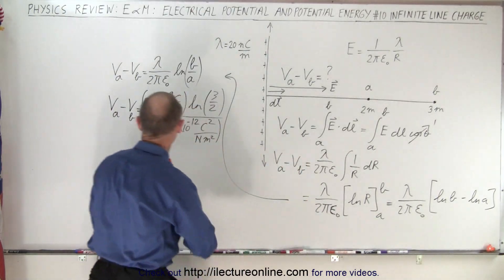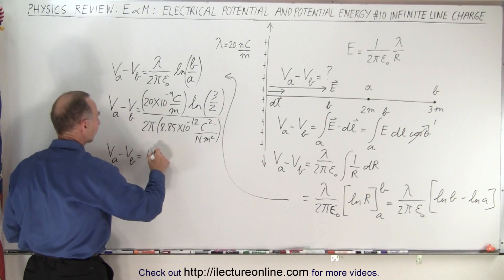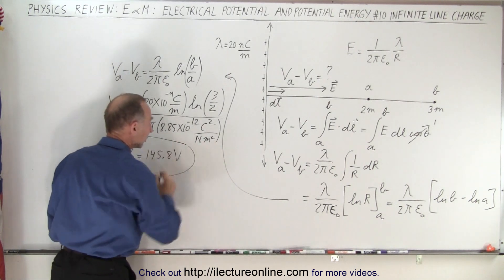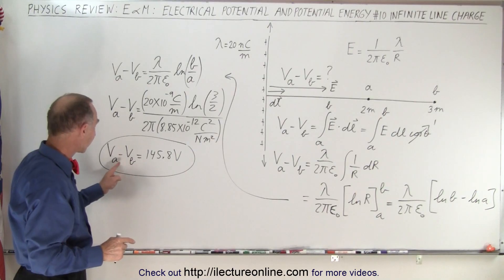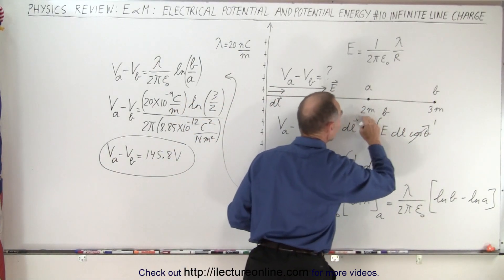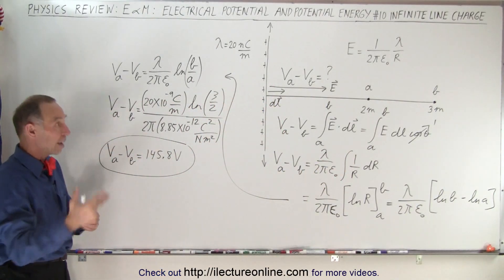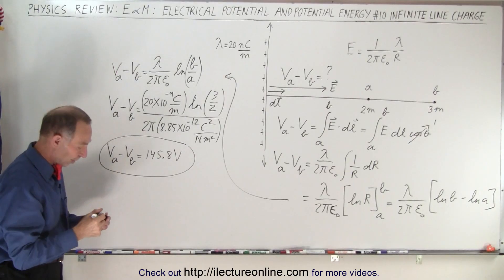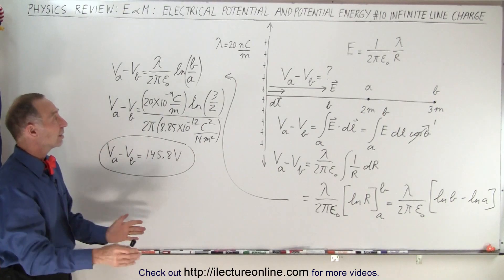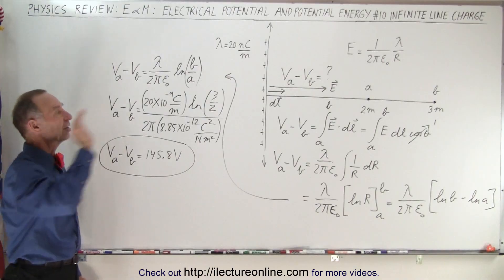So Va minus Vb is equal to 145.8 volts as our answer. Does that make sense? We know that Vb must be higher than Va, and the difference moving from 3 meters to 2 meters causes a voltage change of 145.8 volts positive, because we're moving closer to the positive charge.